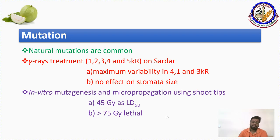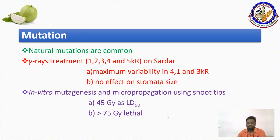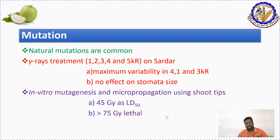Apart from these approaches, there are also biotechnological approaches for improvement, like somatic embryogenesis and others, but there are no spectacular examples yet. For your course, this much information about guava is important — this is just to introduce the different breeding approaches and breeding phenomena of guava. You can post your doubts in the comment section. Thank you.